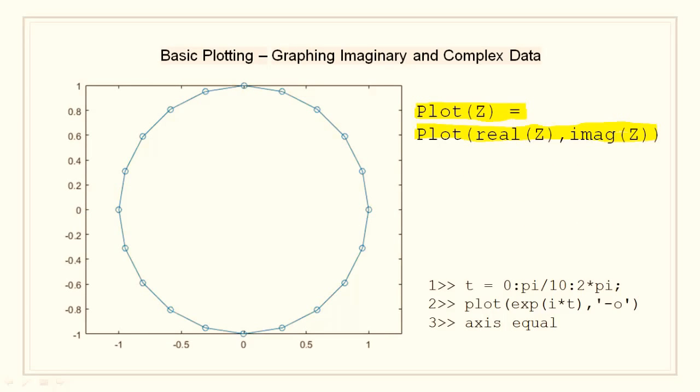Graphing imaginary and complex data. When a complex value is passed as an argument to plot, MATLAB ignores the imaginary part. But when only a single complex argument is passed, this becomes a special case for plot. For this special case, the plot command becomes a shortcut for a graph of real part versus the imaginary part. Therefore, if we have a complex vector z, plot z is equivalent to plot of real parts of z and imaginary parts of z.